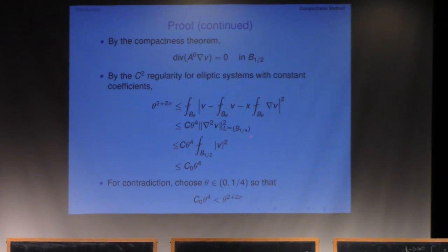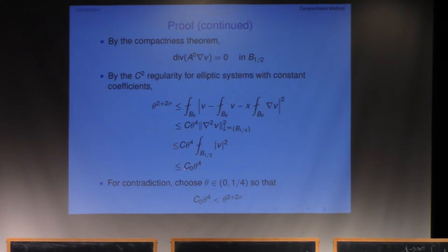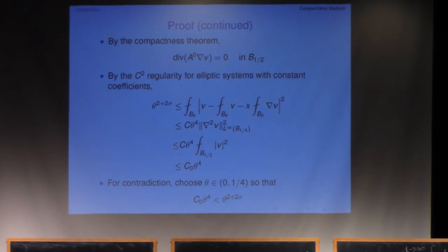The L-infinity norm of v2 divided by the L2 norm of the solution itself. I know the average of v2 on B1 is less or equal to 1, so on B1-half it is bounded by some constant C0. Now for the contradiction, you want to choose a theta so that C0 times theta to the power 4 is less than theta to the power 2 plus 2 sigma.